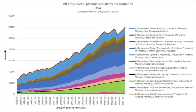Organizational justice is an employee's perception and judgment of employers' treatment in the context of fairness or justice. The resulting actions to influence the employee-employer relationship are also a part of organizational justice.